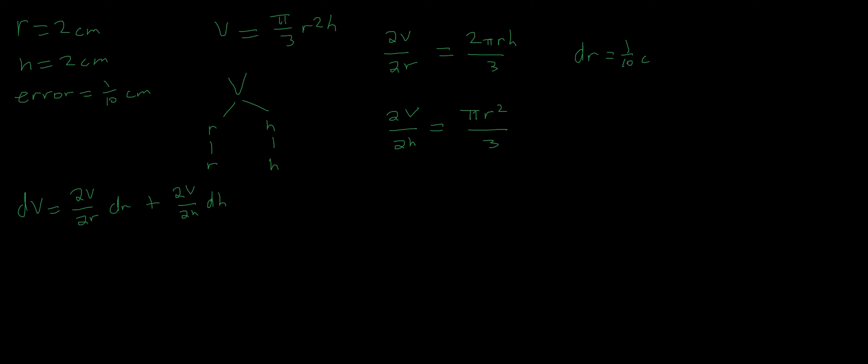dr and dh are given by our error. These are both 1 tenth of a centimeter. Now, plugging into our total differential equation: 2 pi r h over 3 times 1 tenth plus pi r squared over 3 times 1 tenth. This is our total differential function, dV.